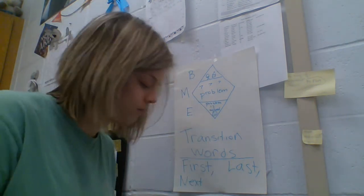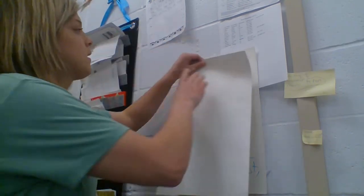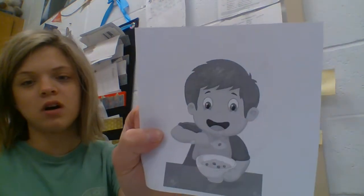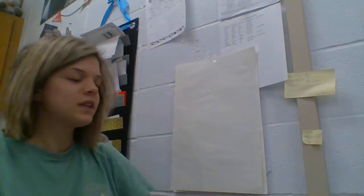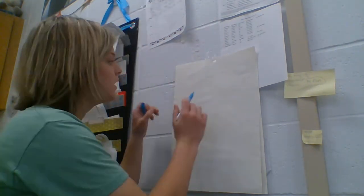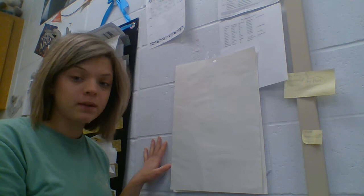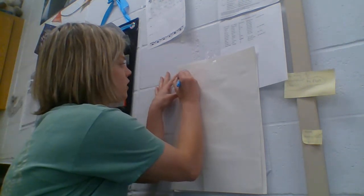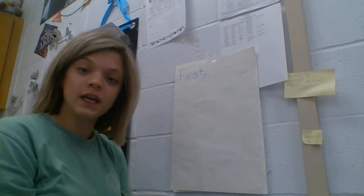Let me get a piece of tape so I can hang this up. So our first picture was the little boy eating breakfast. We're going to call this little boy Dylan — everybody calls him Dill. So we'll start off our story with a transition word. Remember, we start with a capital letter, and then we use a comma. So we go: First, comma, Dill was eating breakfast.